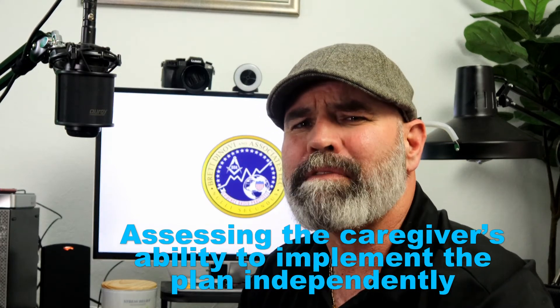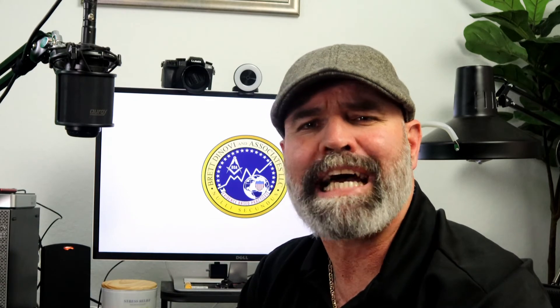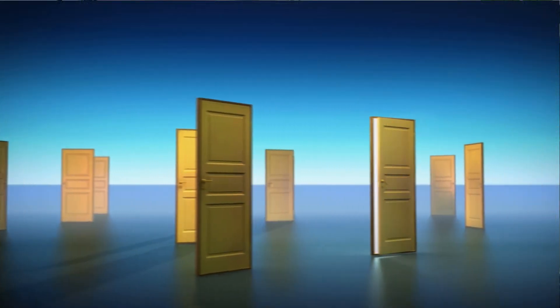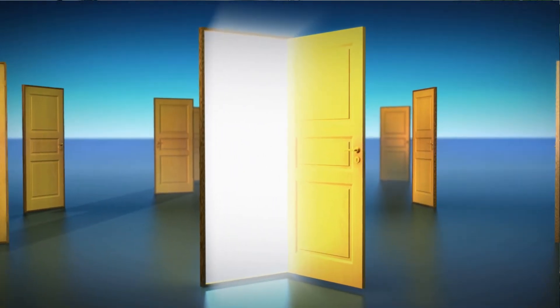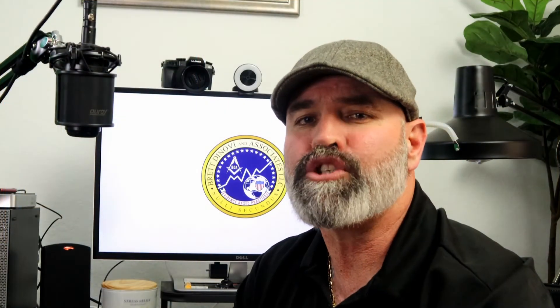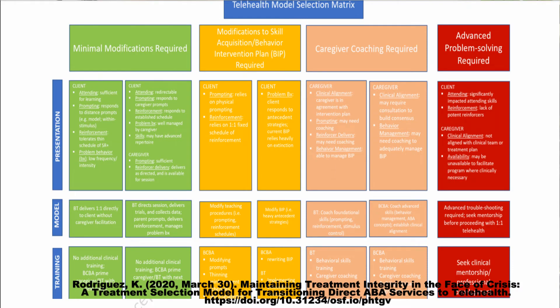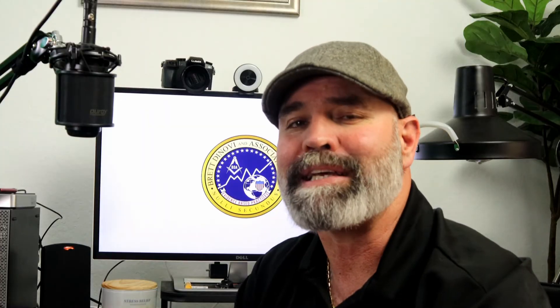Based on the results of the program modification assessment and other data related to learner and caregiver repertoires, the behavior analyst uses the telehealth model selection matrix to determine the most appropriate telehealth treatment model. The matrix categorizes and determines treatment structure based on a learner's repertoire and needs, and also allows the behavior analyst to assess caregiver repertoires and training needs based on their ability to facilitate session structure and manage problem behaviors.